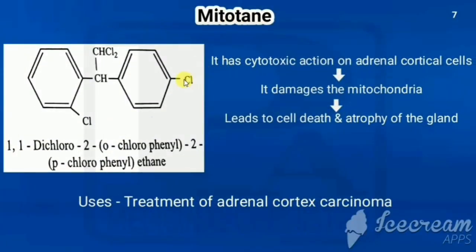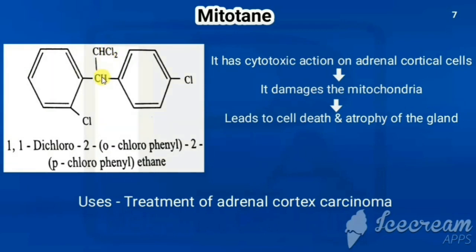Next is mitotane. Its structure has a benzene ring (phenyl) with an ortho-chloro substituent. The center is a CH-CHCl2 unit. There is also a para-chlorophenyl group. The parent chain is ethane (two carbons): the first carbon has two chlorines (1,1-dichloro), and the second carbon bears an ortho-chlorophenyl and a para-chlorophenyl group, giving 1,1-dichloro-2-(ortho-chlorophenyl)-2-(para-chlorophenyl)ethane.